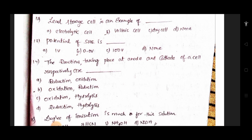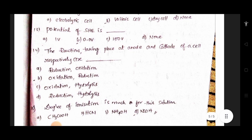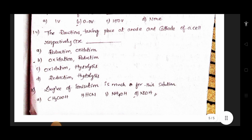Or any reaction for anode and anode, there is anode, there is anode, there is an cell. There is an otho equation. Degree of ionization is much for which solution: CH3OH, HCN, NH4OH, and OH.